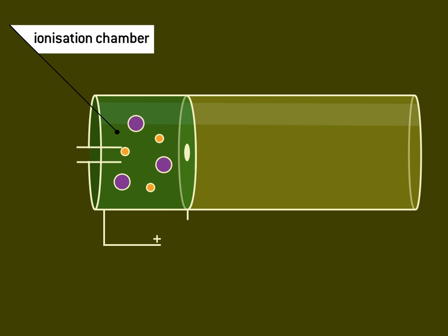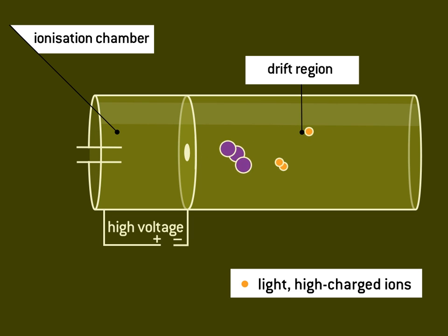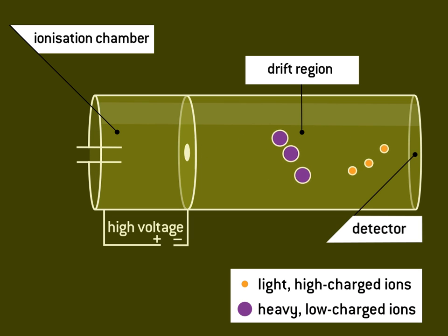The positively charged ions are then accelerated by an electrical field. Lighter ions and those with a higher charge move more quickly than heavier ions and those with a lower charge, so reach the detector earlier.